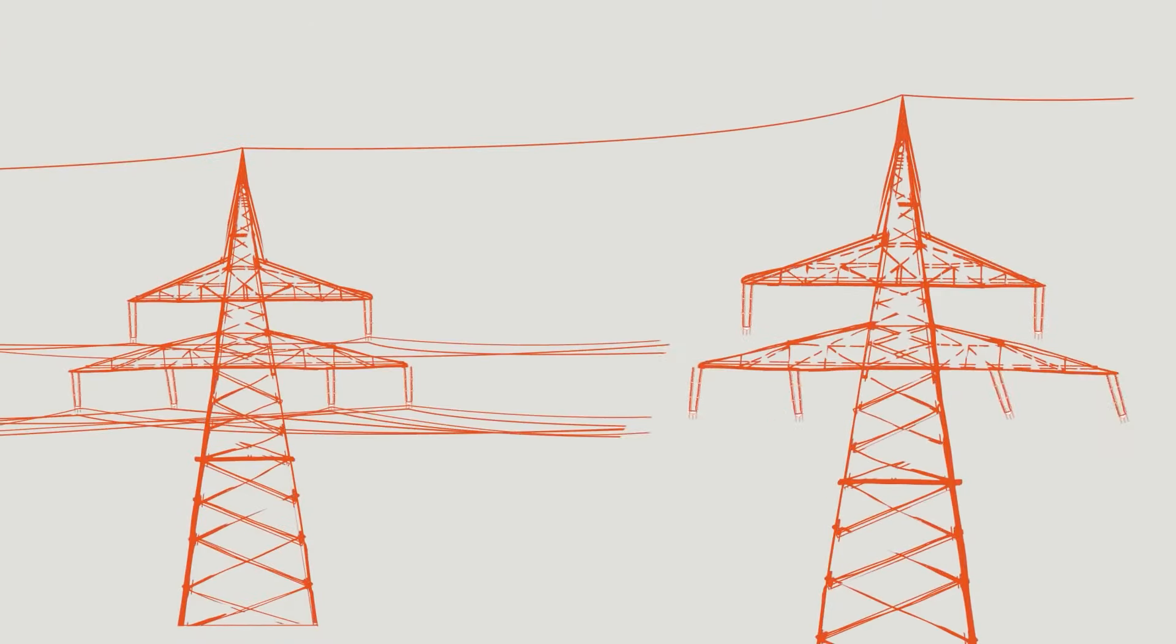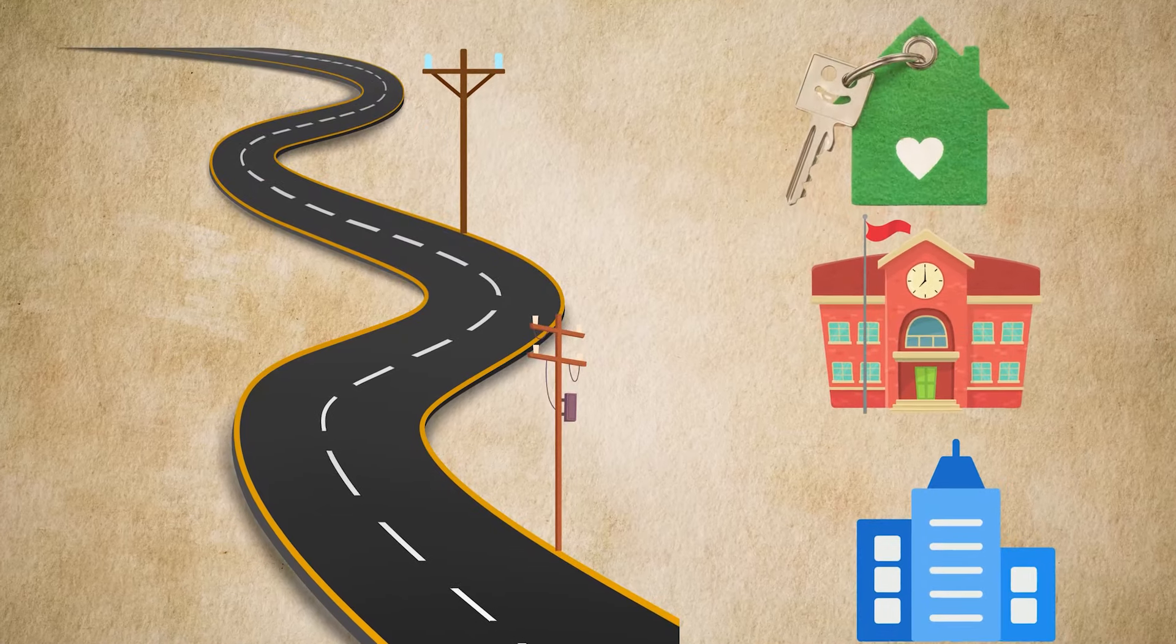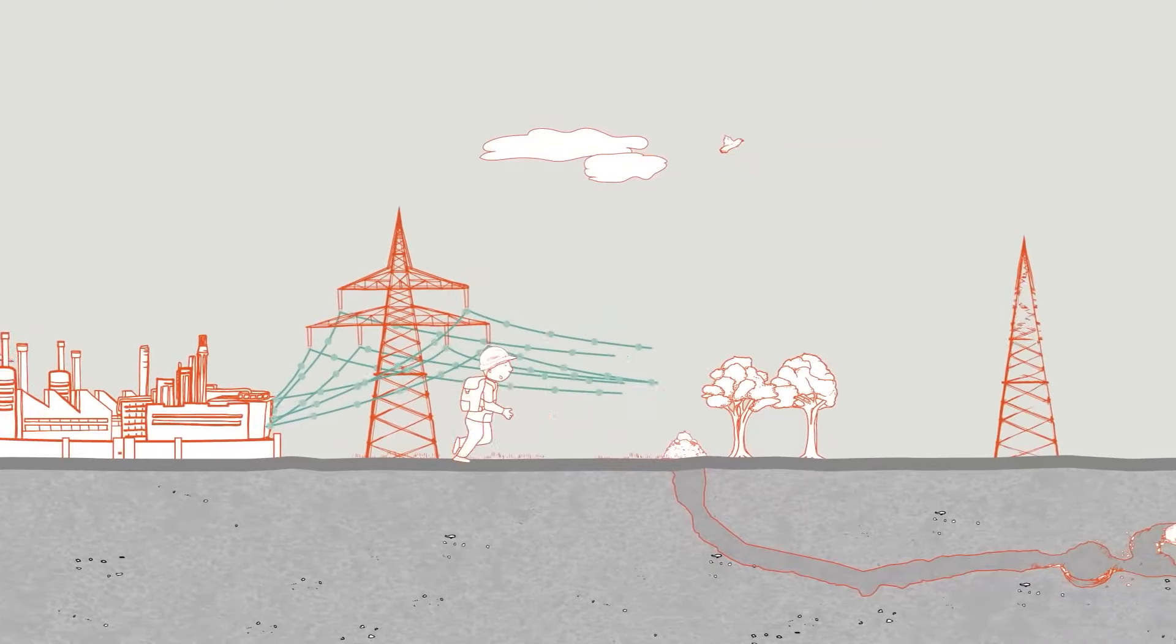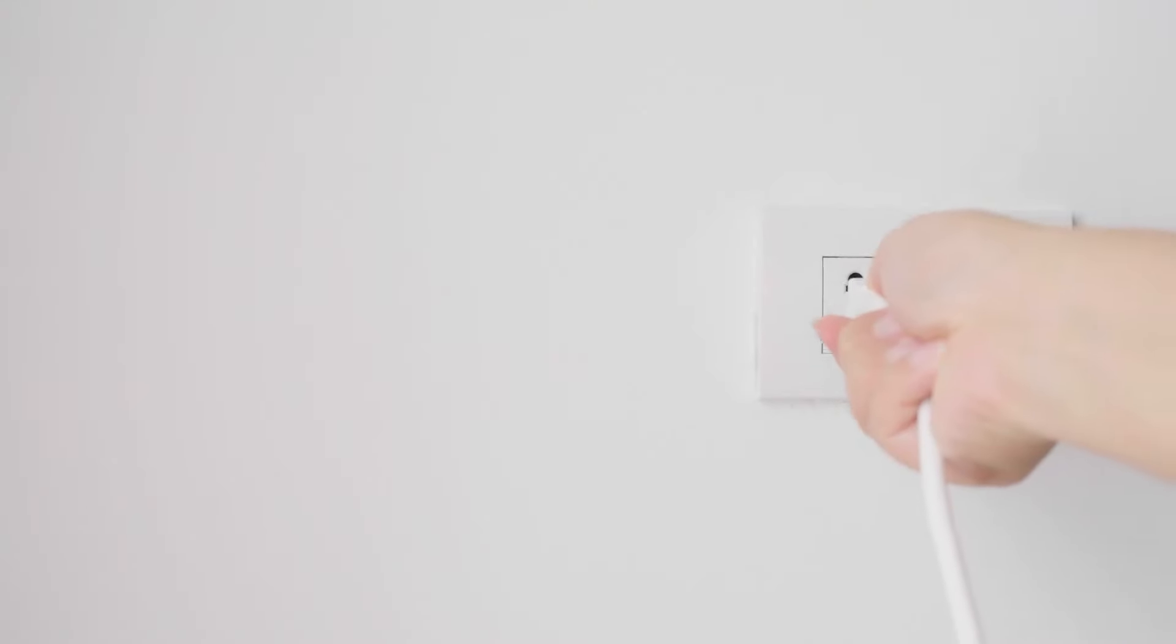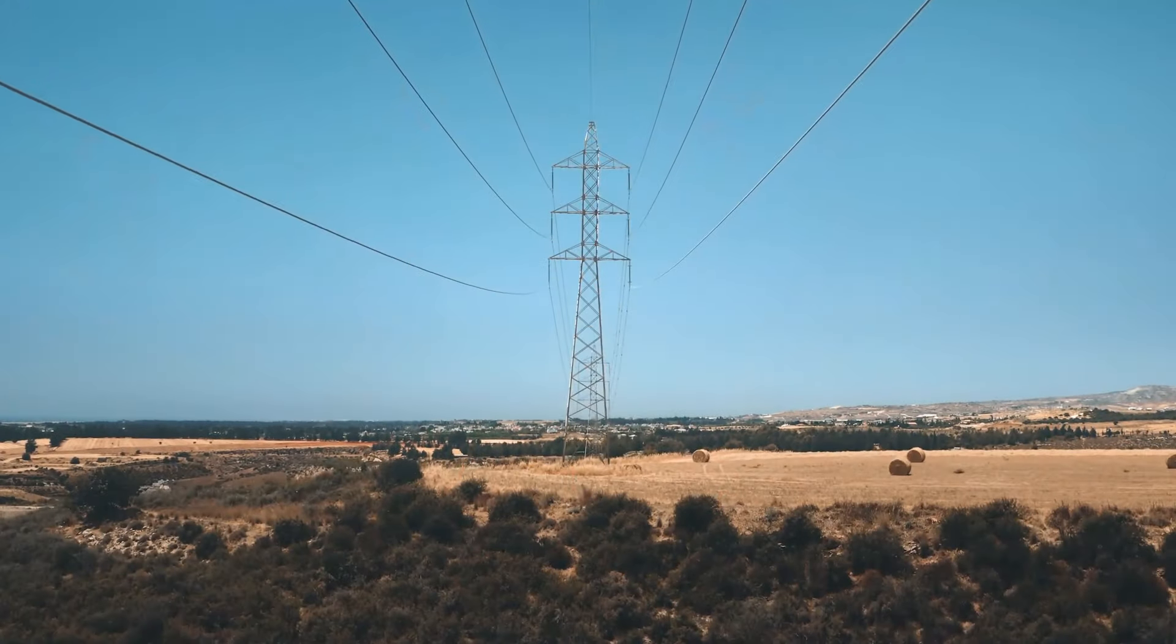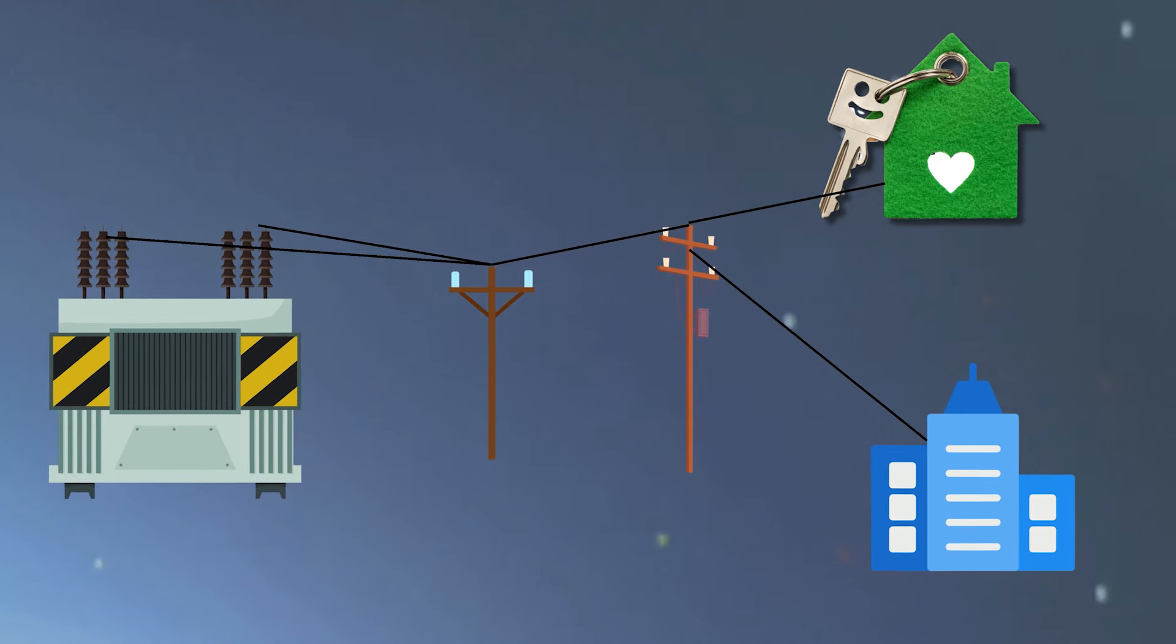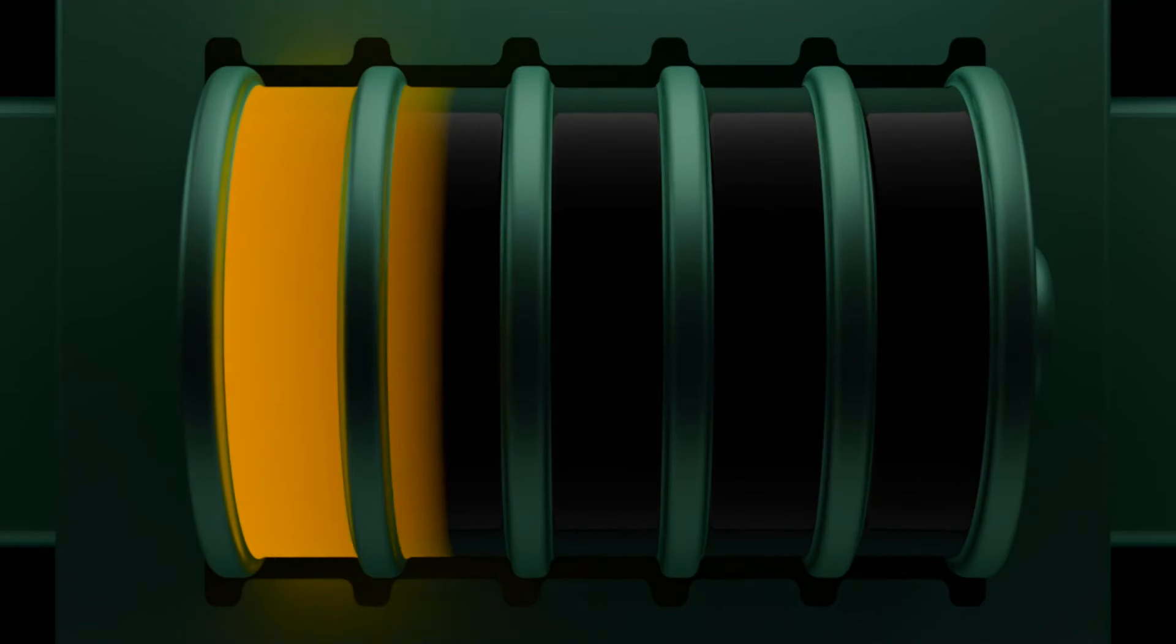The final step of the journey occurs on distribution lines which are the smaller roads leading to our homes, schools and businesses. These distribution lines carry electricity at lower voltages making it safe for everyday use. Distribution lines can be likened to the local streets in the energy world, the last mile of the journey. They transport electricity from the substations to our homes and businesses, ensuring it's at a voltage that won't harm us or our appliances.